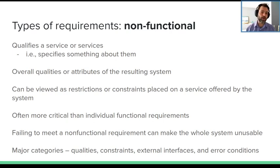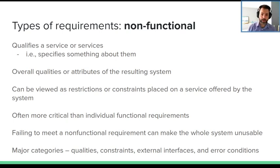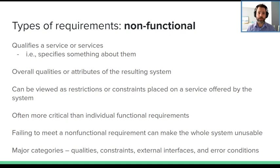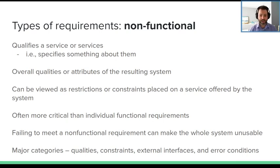Non-functionals are sometimes called the 'ilities' — usability, performability, and so on. It's the fluffy types of things that separate a standard application from something very good: maybe it responds quickly, maybe it's highly secure. They can be measured, but it's very difficult. For example, a usability non-functional requirement — 'system must be highly usable by as many people as possible' — sounds good on paper, but to measure it you might need user studies with 500 people.